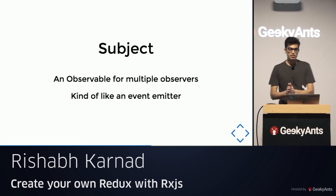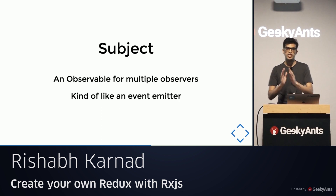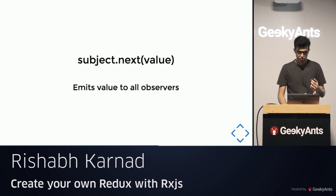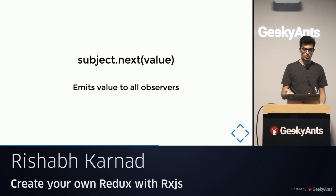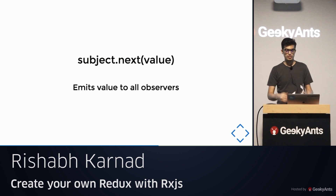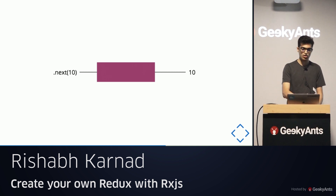There is also something called a Subject. A Subject is almost like an observable but helps you deal with multiple observers at the same time, behaving like an event emitter. The Subject emits events and many observers can subscribe to it. To update all observers, you call dot next on it and pass a value — that value gets emitted and reaches all observers.